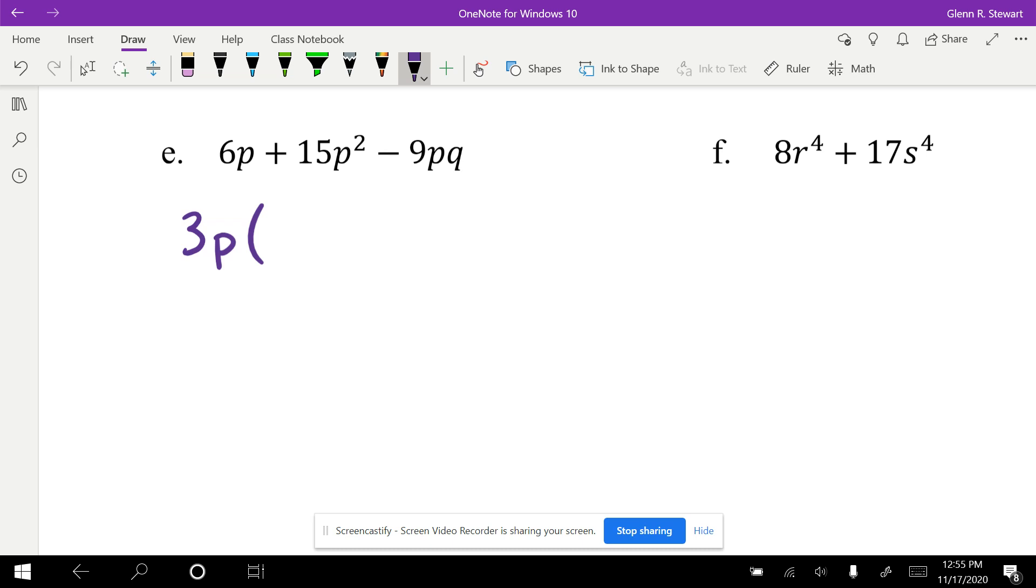We're using multiplication. 6 divided by 3 is 2. Remember, because 2 times 3 will give us that 6. The p was taken out. 15 divided by 3 is 5, and I took one p out so I have to leave at least one there.